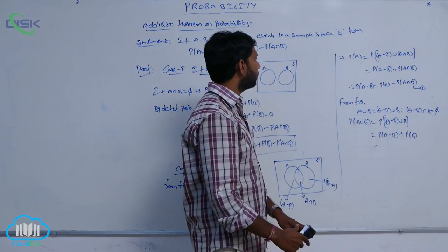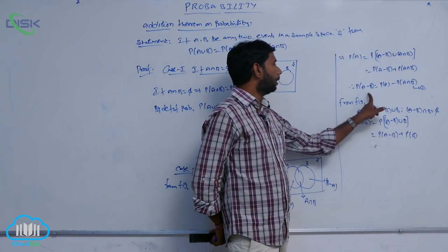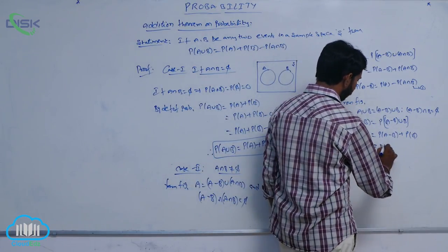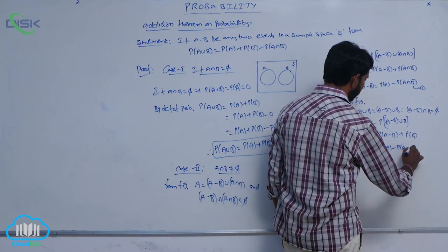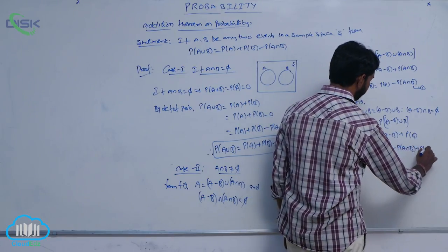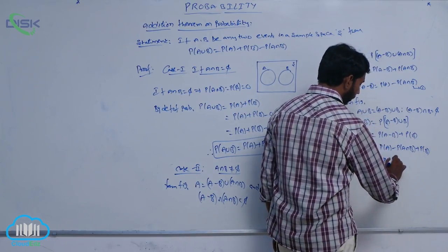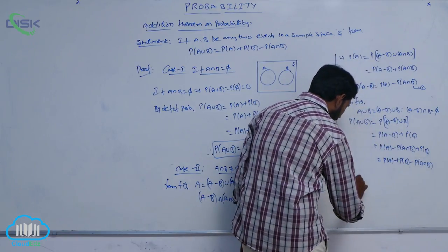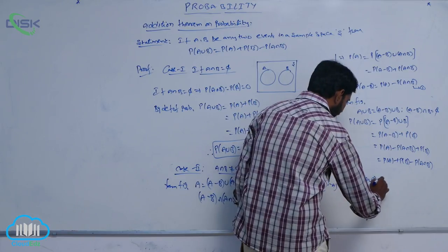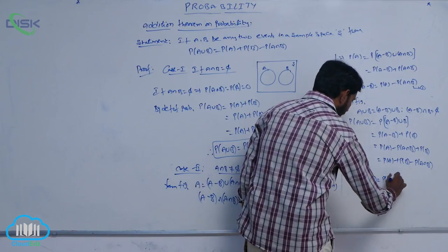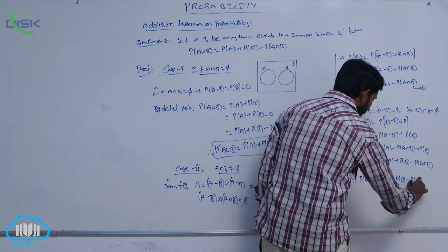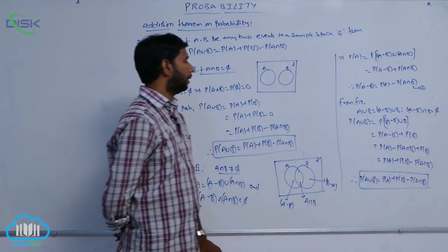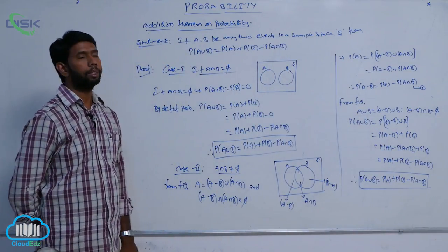From condition 1, P of A minus B can be written as P of A minus P of A intersection B. Therefore, P of A union B equals P of A minus P of A intersection B plus P of B, which equals P of A plus P of B minus P of A intersection B. Therefore, P of A union B is equal to P of A plus P of B minus P of A intersection B.